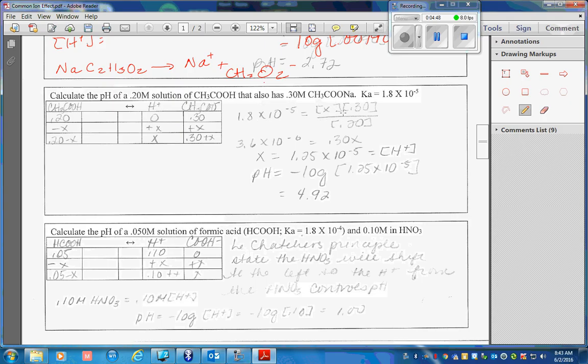So our math looks like this. Here is our Ka value. This represents the concentration of the hydrogen ion. Here is the concentration of the acetate ion. Once again, we can disregard the plus x because it is negligible for our math. When I do my math, I find that x is equal to 1.25 times 10 to the negative 5th. That is the hydrogen ion concentration. The pH is the negative log of that and our new pH is 4.92.